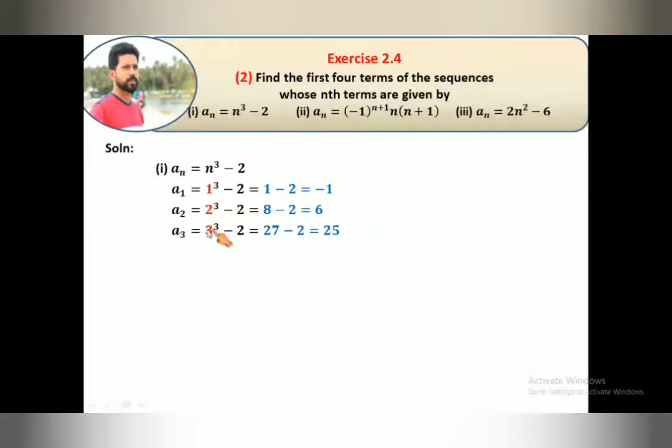The third term, a₃ = 3³ - 2. 3³ value is 27, 27 minus 2 equals 25.